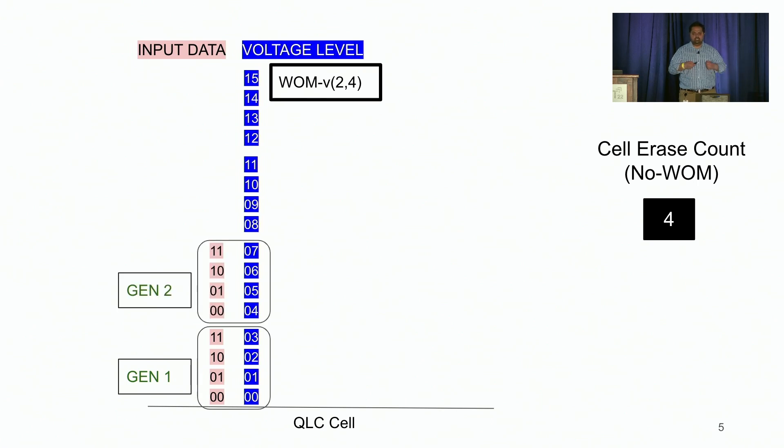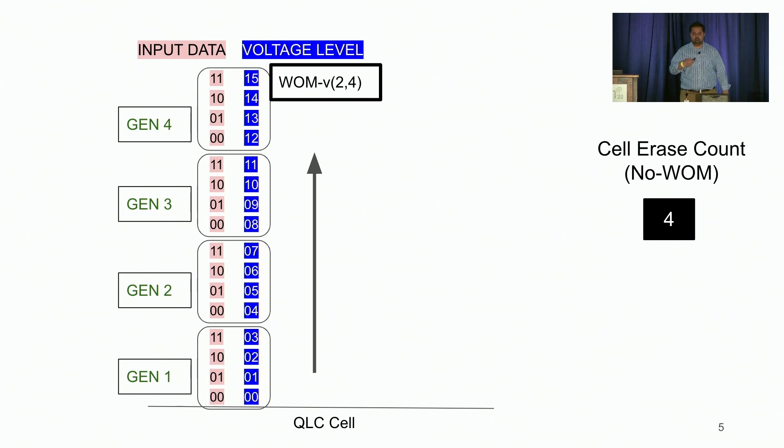Moving forward, on the second overwrite to the cell, the next four voltage levels are used, and we call this write as a generation two write, and note that between generation one and generation two, we did not have to erase the underlying SSD cell. This is followed by a third write and a fourth write, which monotonically increases the voltage level from a lower to a higher value without requiring any erase operation on the underlying QLC cell.